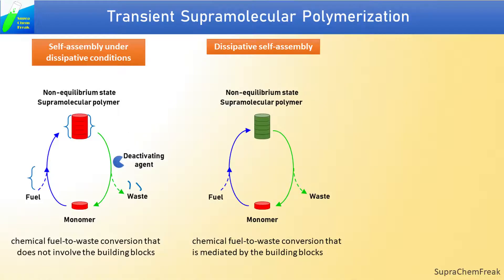Second is dissipative self-assembly: a self-assembly process associated with chemical fuel-to-waste conversion that is mediated by the building blocks. In this case as well, the fuel activates the monomer to undergo assembly. However, the monomers in self-assembly are directly involved in the deactivation step, such as redox.